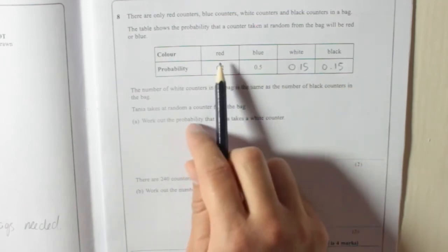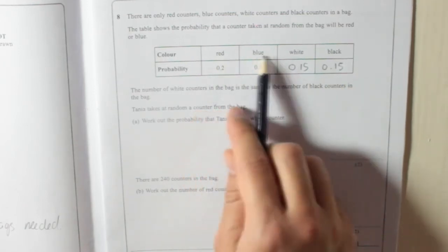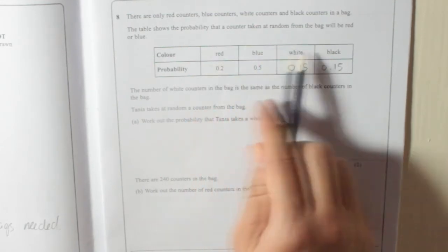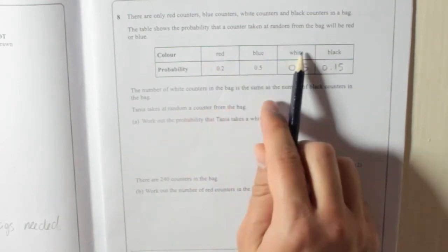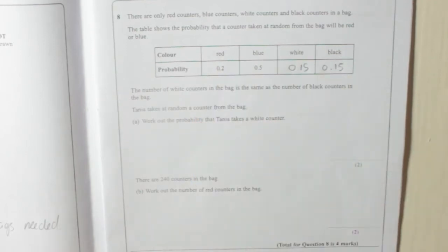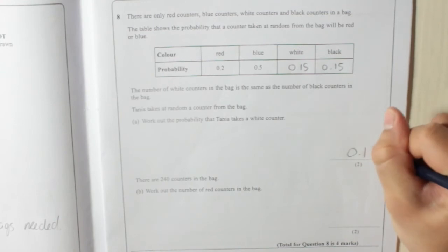And the reason they all add to 1 is because you can only either get red, blue, white or black. You can't get any overlapping or anything. They are mutually exclusive. And when you've got mutually exclusive possibilities, they add up to 1. So 0.15.